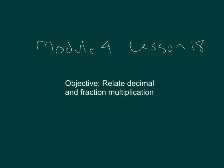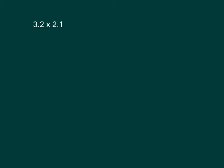The objective within this lesson is to relate decimal and fraction multiplication. Let's rewrite this problem as a fraction multiplication expression. How many tenths is that? It's 32 tenths times 21 tenths.